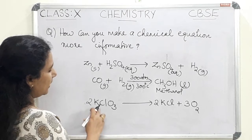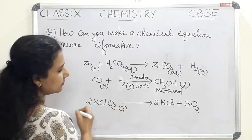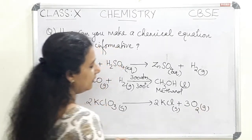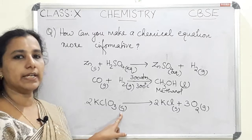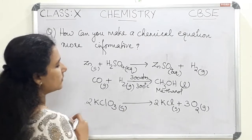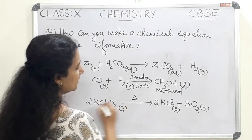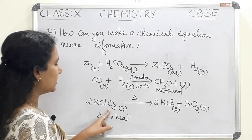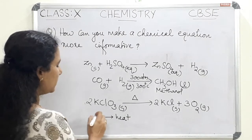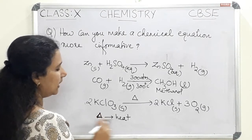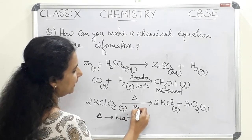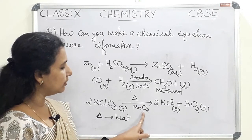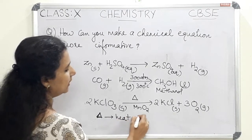Consider the next equation: KClO₃ gives KCl + O₂. KClO₃ is a solid, KCl is also a solid, and O₂ is a gas. We indicate the physical states of the reactants and products. We can also write the delta symbol above the arrow, which represents heat — meaning we are heating KClO₃ to get these products. Additionally, MnO₂ written above or below the arrow indicates it is acting as a catalyst.